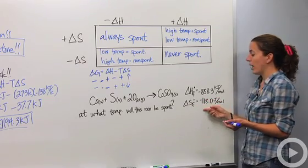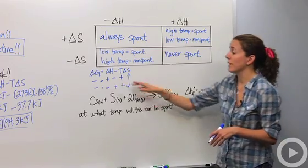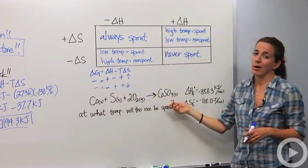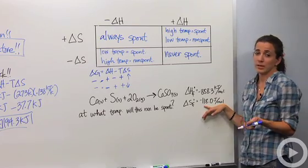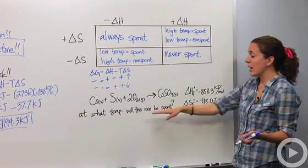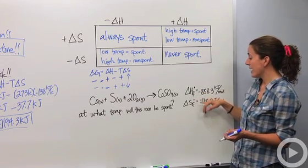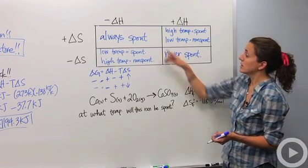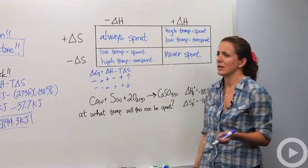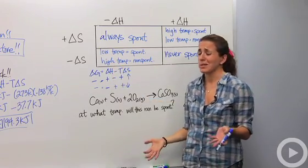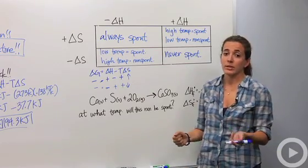It also goes down in disorder — going from many particles to one particle — so it actually decreases in entropy. So at what temperature will this reaction be spontaneous? We have a negative delta H and a negative delta S, so it should be spontaneous at lower temperatures and non-spontaneous at higher temperatures. But what exactly is low and high? We can find that by setting delta G equal to zero.